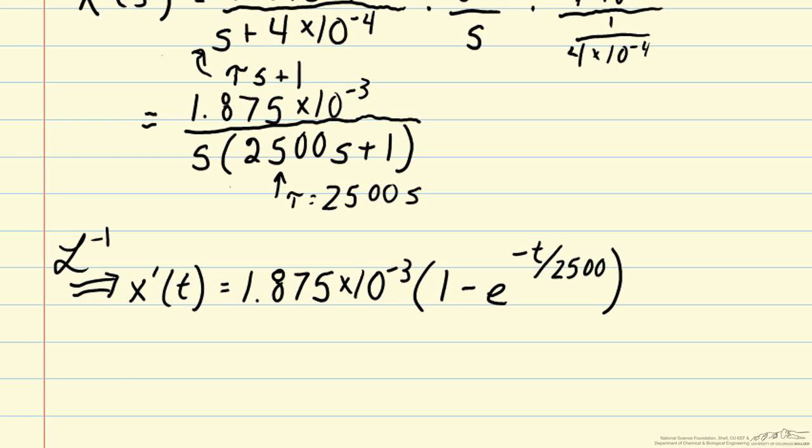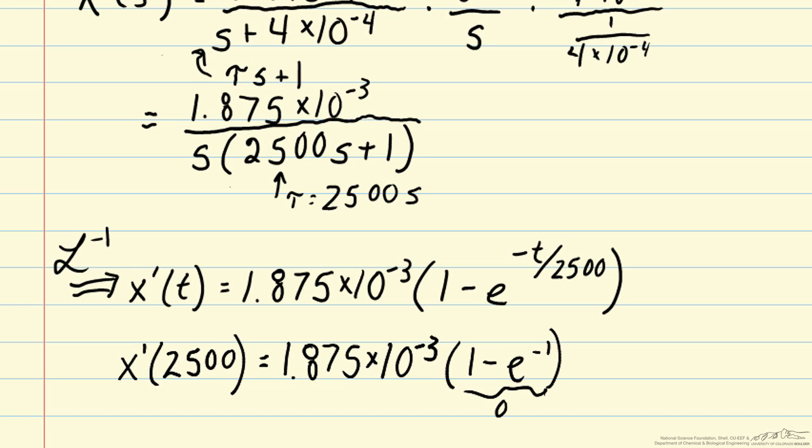In fact, if we evaluate x' at the time constant 2,500, we see that it is equal to 1.875 times 10 to the minus 3, which is the long term value at infinite t times 1 minus e to the minus 1. That quantity is about 0.63. So we can see that we've reached 63% of that long term behavior in 2,500 seconds.